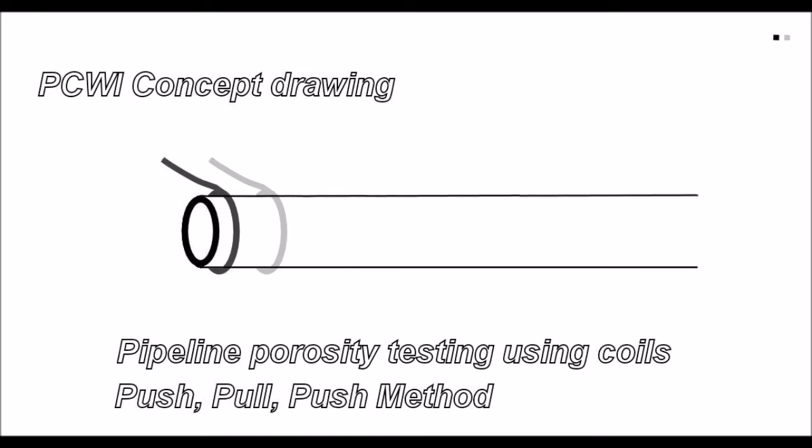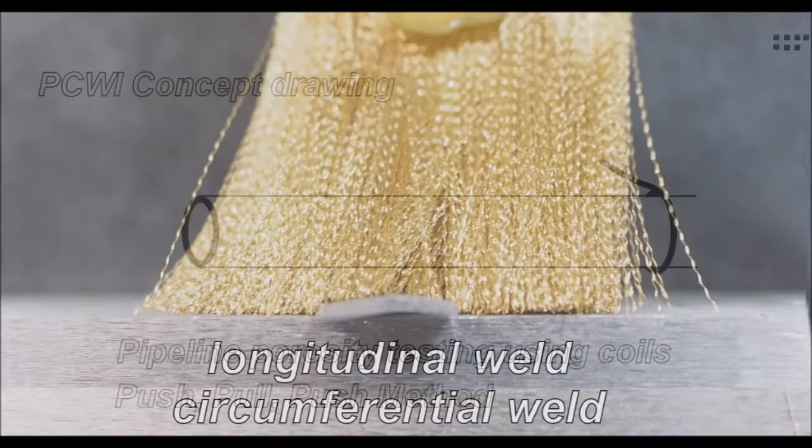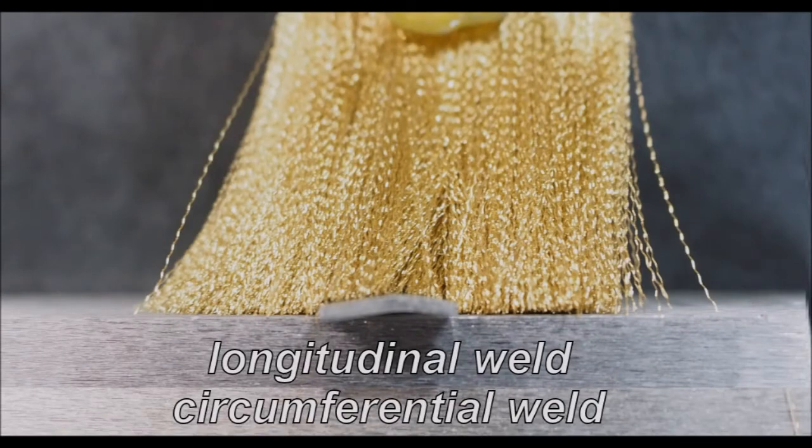With the possibility of even changing the position of the coil around the circumference of the pipe, so as to make sure that you're fully tested. Once again, showing the longitudinal weld and the circumferential weld.